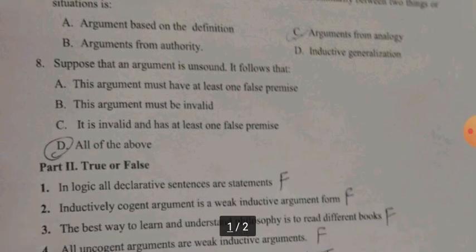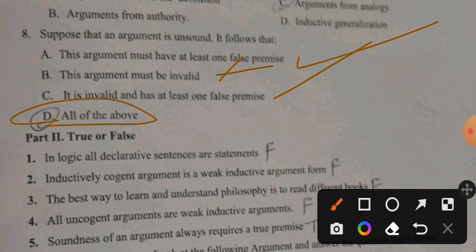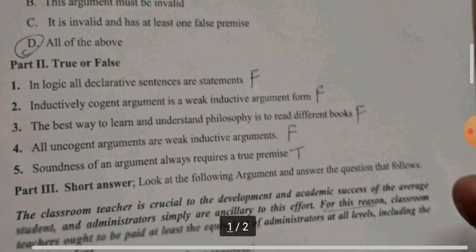Question 8: Suppose that an argument is sound. If an argument is sound, this argument must have at least one false premise or be invalid? No. A sound argument is valid and has at least one false premise? No, all true premises.